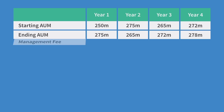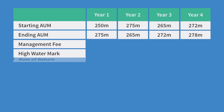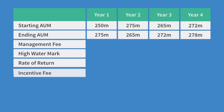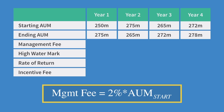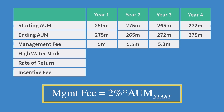Let's work through this logically. First we can tackle the management fee for each year, because this amount is going to be paid regardless of performance. The management fee is calculated as 2% of the starting AUM. In year 1 that's 2% of 250 million which is 5 million. In year 2 it's 2% of 275 million which works out at 5.5 million. Year 3 is 5.3 million and in year 4 it works out to be 5.44 million.